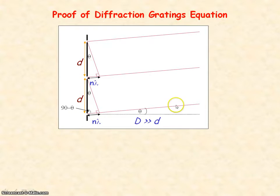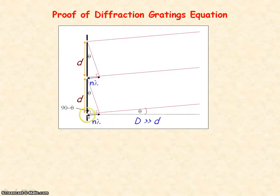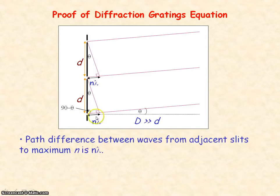These represent the waves from the slits that are meeting to form maximum n. The distance between the screen and the slits is much, much greater than the distance between the adjacent slits of the grating. The light waves are diffracted by the slits through an angle theta. The path difference between waves from adjacent slits to reach maximum n is then n lambda.